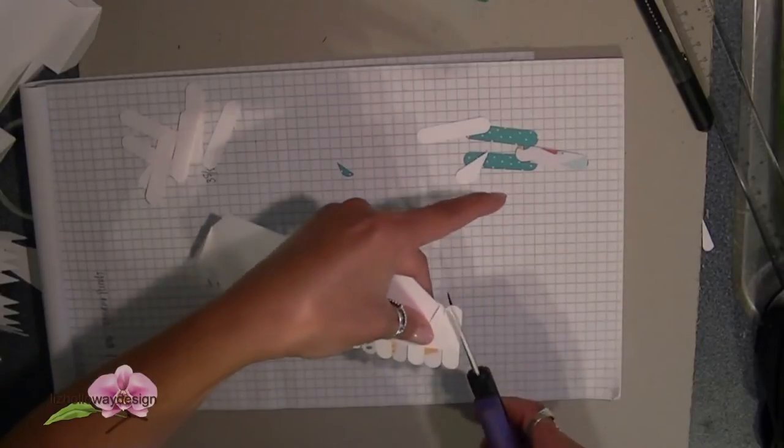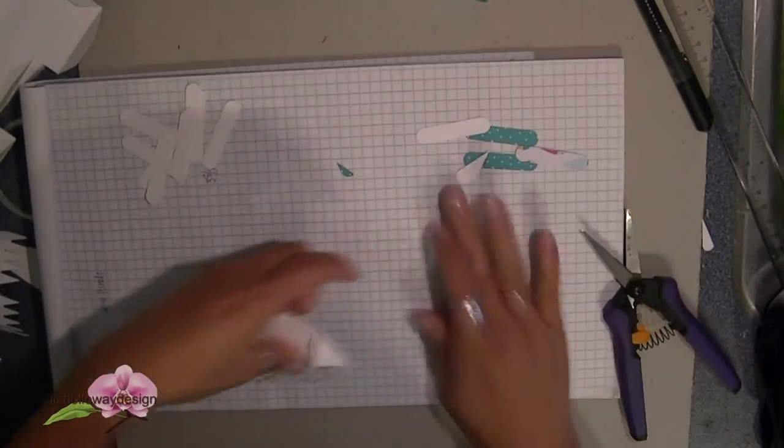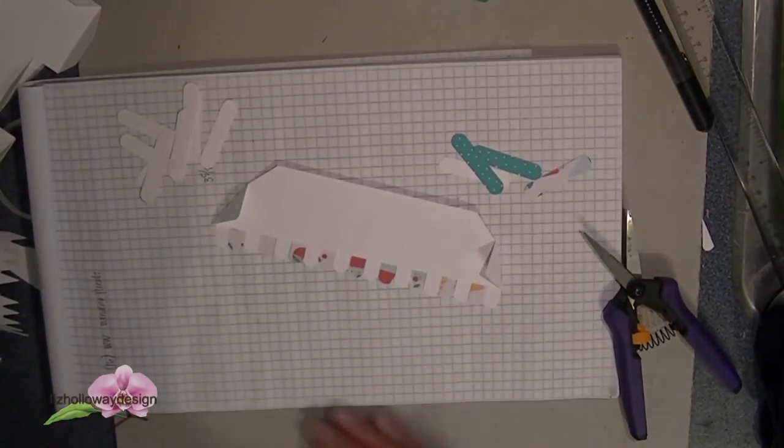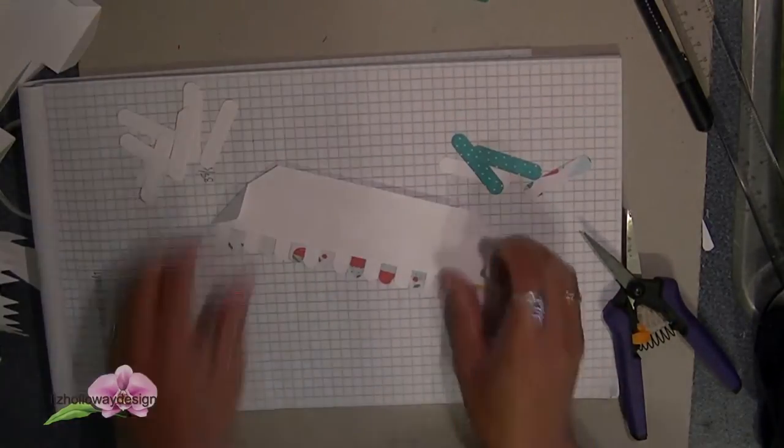So I'm turning the project over the awning over and I flip the tabs down and then this will give me the guidelines to trim the excess off on the corners.